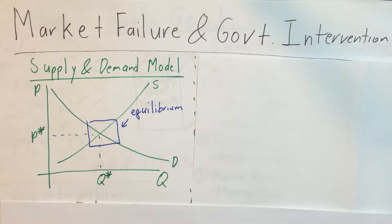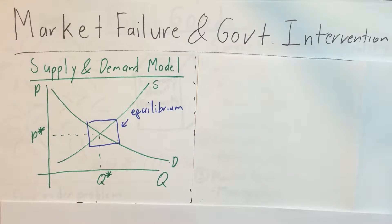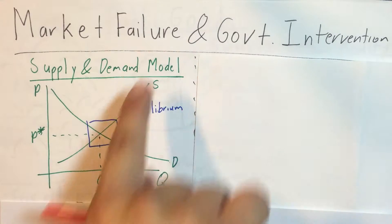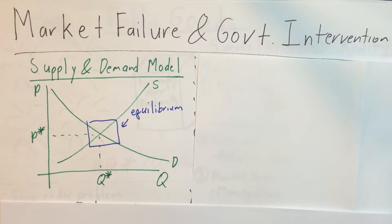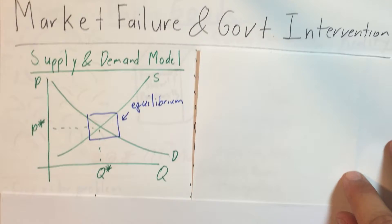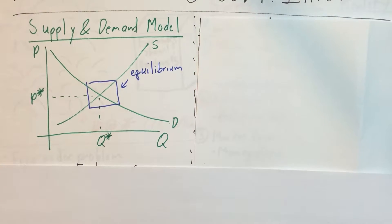So we're all happy, everything's efficient, right? Well, the problem is that when we take this model and start relaxing its assumptions — we don't assume perfect competition, we don't assume perfect information — we start getting some deviations. Maybe we don't get an efficient outcome, maybe we get a market failure, and maybe government intervention is necessary.